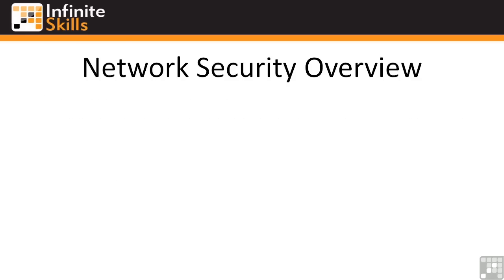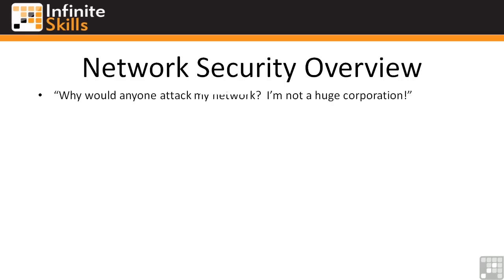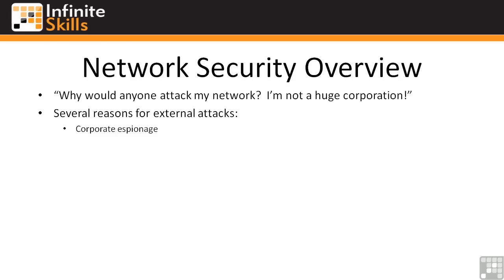Some of you, especially if you're just starting out in networking and dealing with a small company, may be thinking: why would anyone even attack my network? I'm not a Fortune 500 company — I don't deal with nuclear launch codes. Well, there are several reasons for external attacks. The first is corporate espionage. Even if you're not a huge corporation, you may fit in a niche that deals with sensitive information. For example, a company with about 600 employees that deals with protected health information daily could be attacked so that someone could poach customers or perpetrate scams against clients.